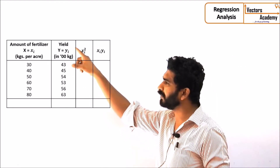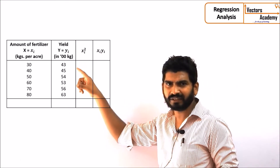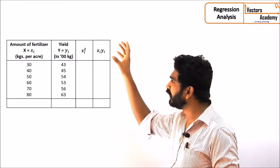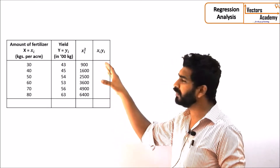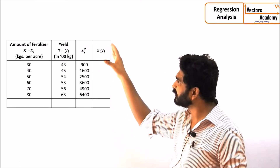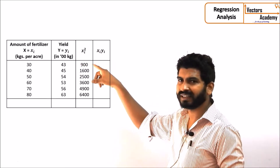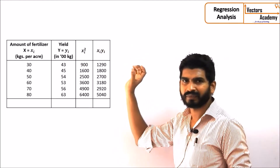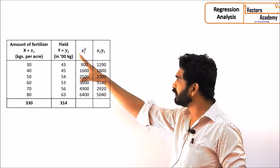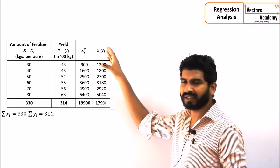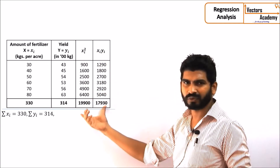Fertilizers can be taken as x and the variable for the yield can be taken as y. We need to extend this table to include x squared — we have to square the values of the fertilizers — and x into y. Once we square the values of x and multiply x and y, we can take their totals.